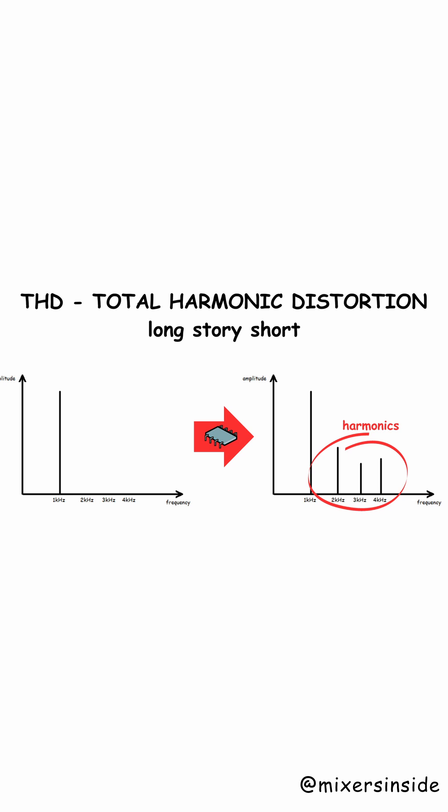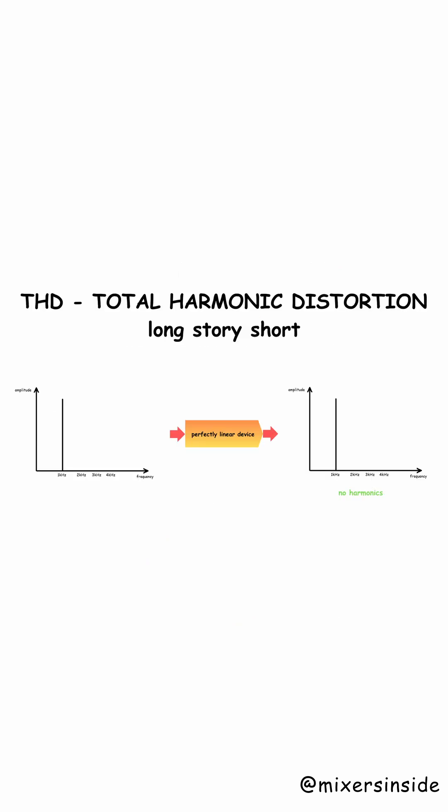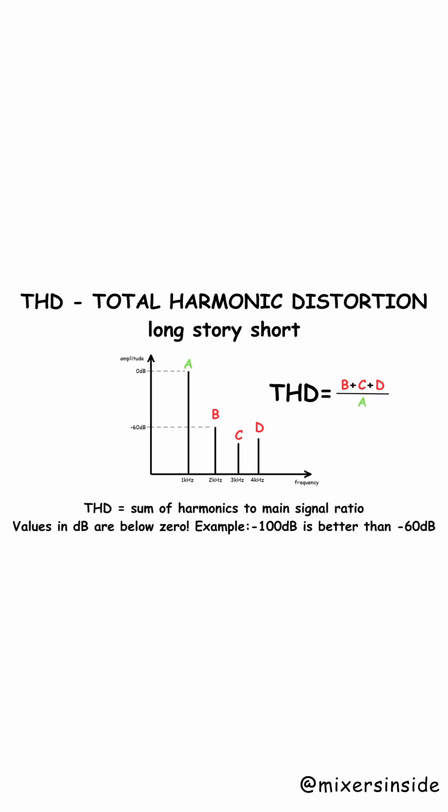Every device you can get is nonlinear at some level. The less linear the device is, the more harmonics you will get. Perfectly linear devices don't exist. THD, Total Harmonic Distortion, is the most popular way of judging device linearity. The more linear the device is, the more accurate reproduction of the audio signal you'll get.